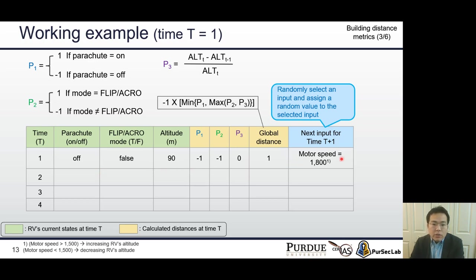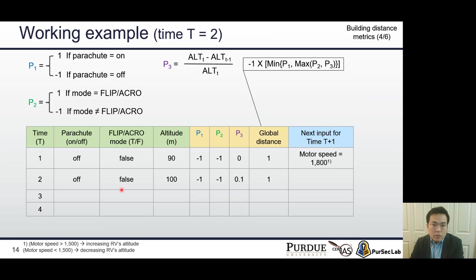PGFUZZ randomly selects an input and assigns a random value to the selected input for next time T=2. For example, let's assume that PGFUZZ increased motor speed. The RV shows increased altitude because we increased motor speed. First, we log a pair of input and value because this input pair increased propositional distance P3.